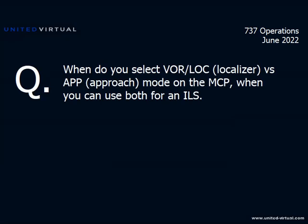The first question is from Tim. When do you select VOR LOC — that is, localizer mode — versus approach mode on the MCP when you can use both for an ILS? Does it depend on the distance from the FAF? That is, is approach mode availability limited by the distance to go to the station?